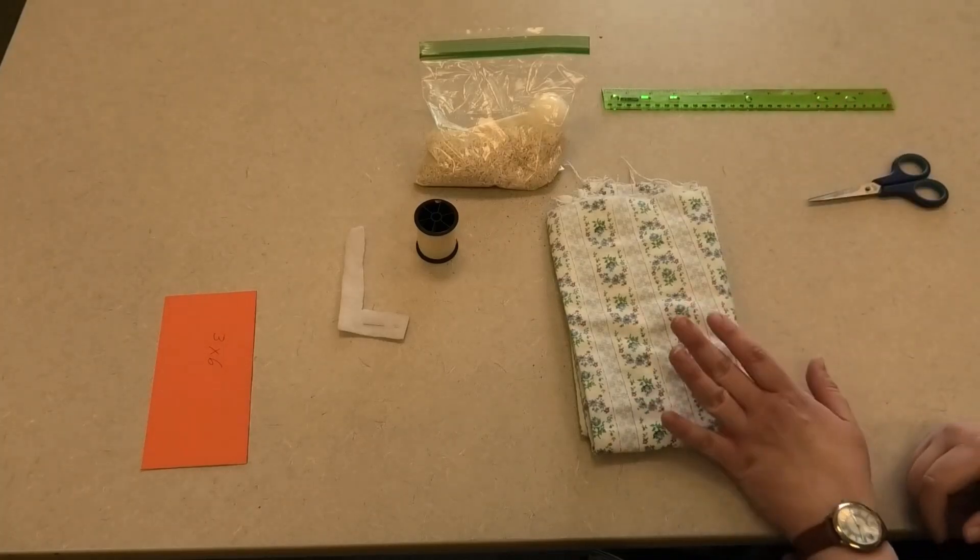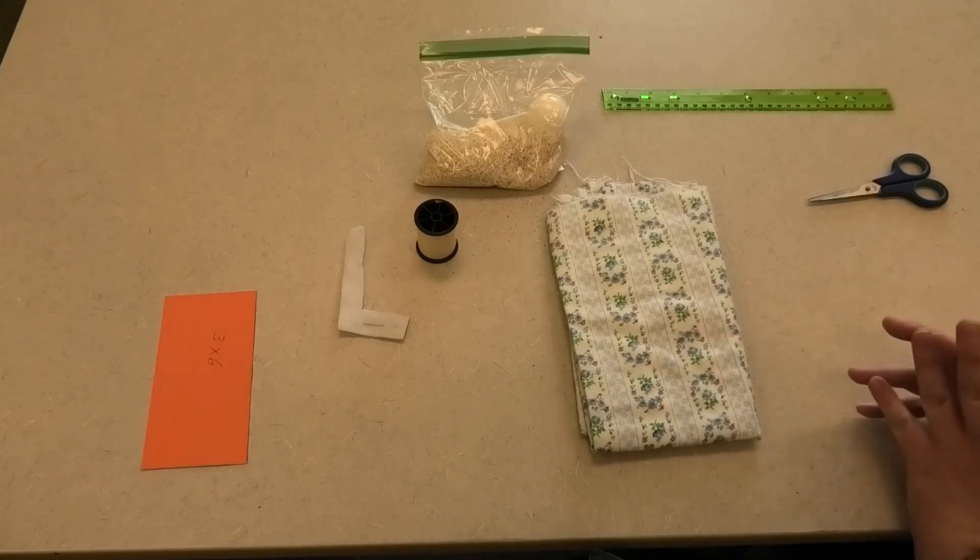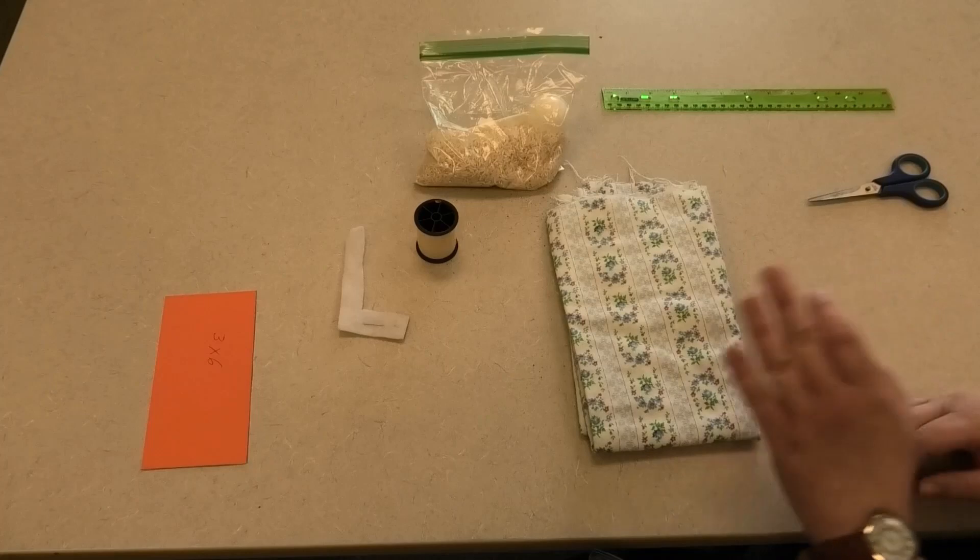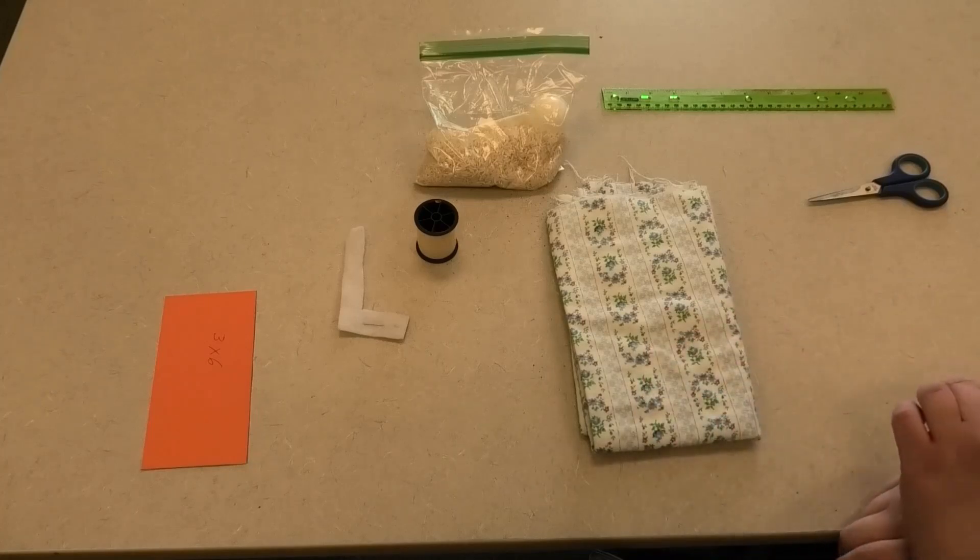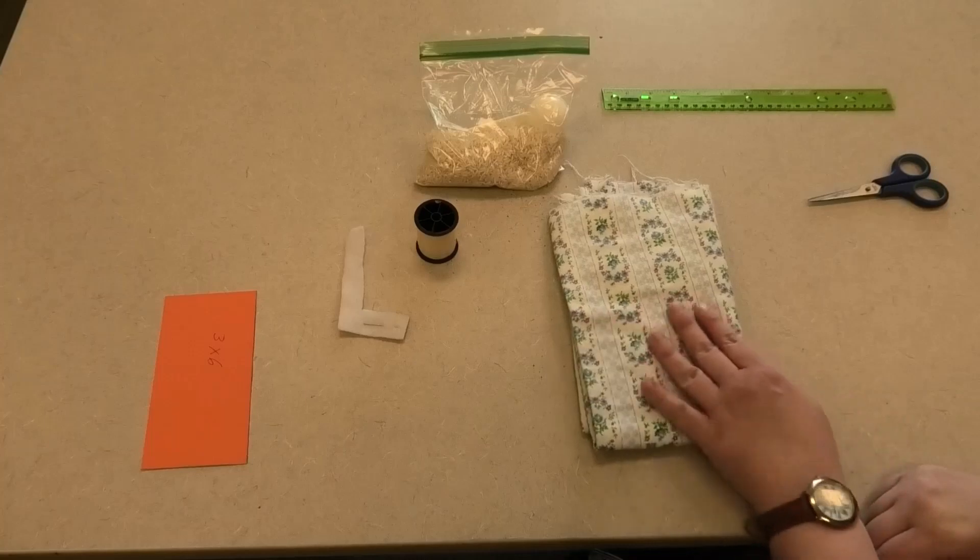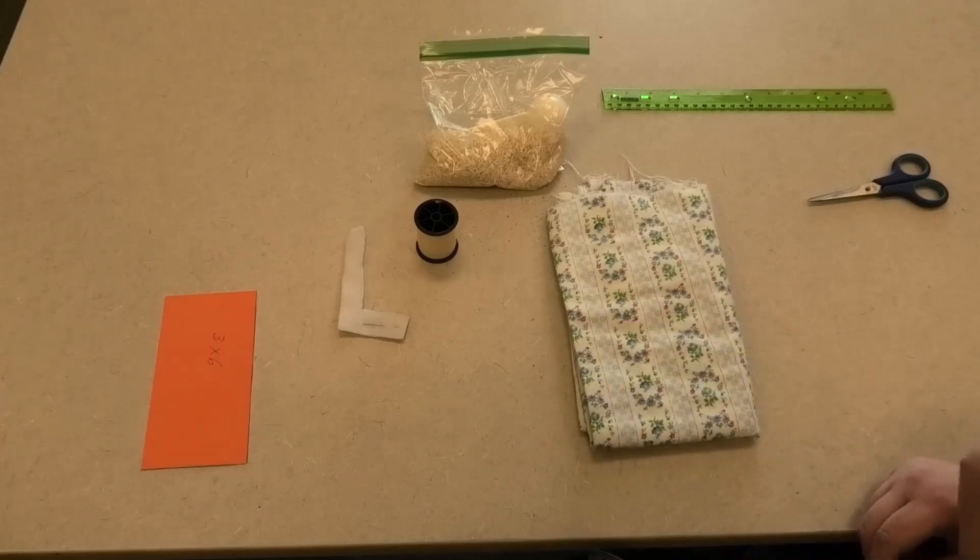For your material we're only going to need a very little bit as our pack is only going to be three by six inches. You'll want to use a fabric that is 100% cotton so it can safely go in the microwave. I chose some scrap flannel that I had lying around to give it just an extra little bit of warmth and comfort.